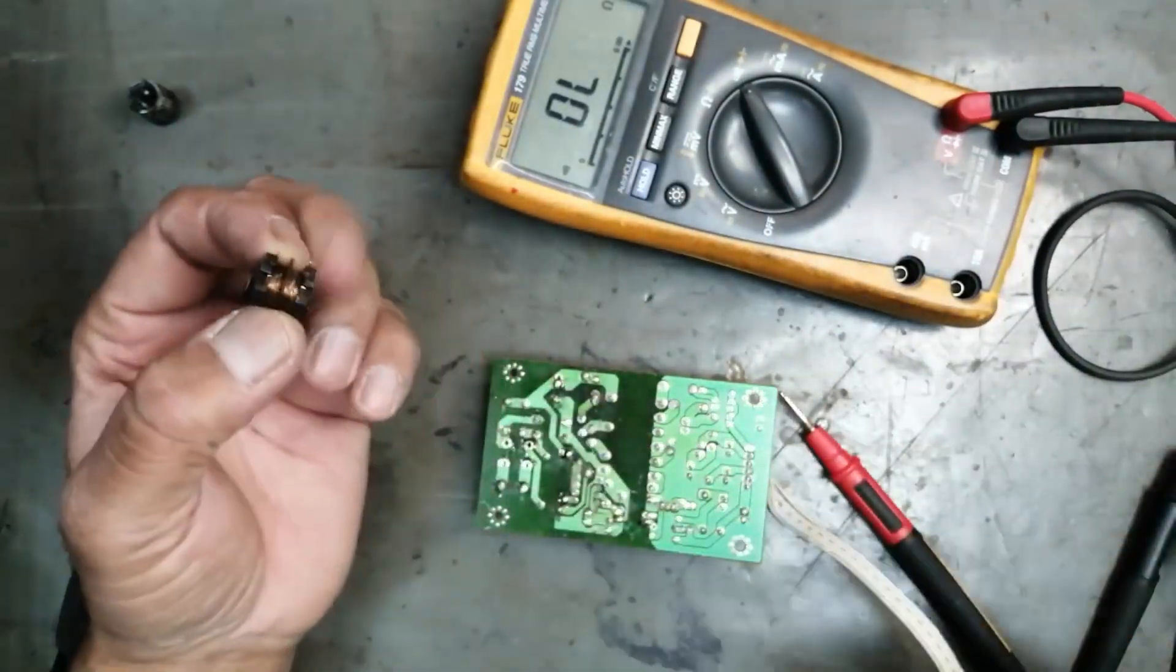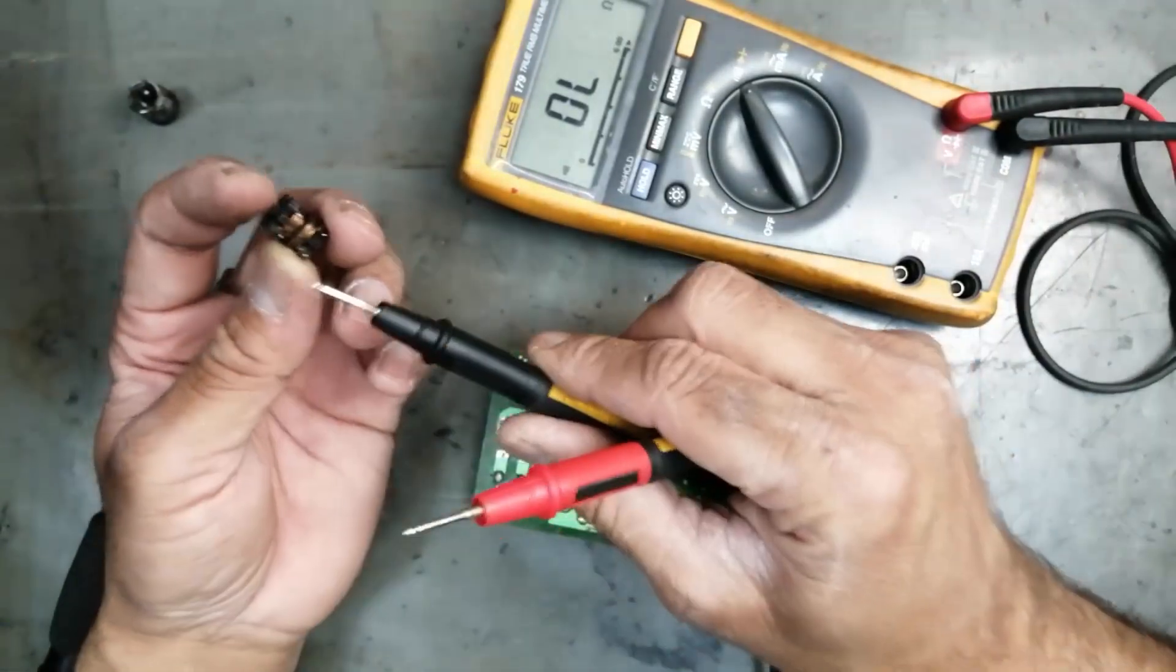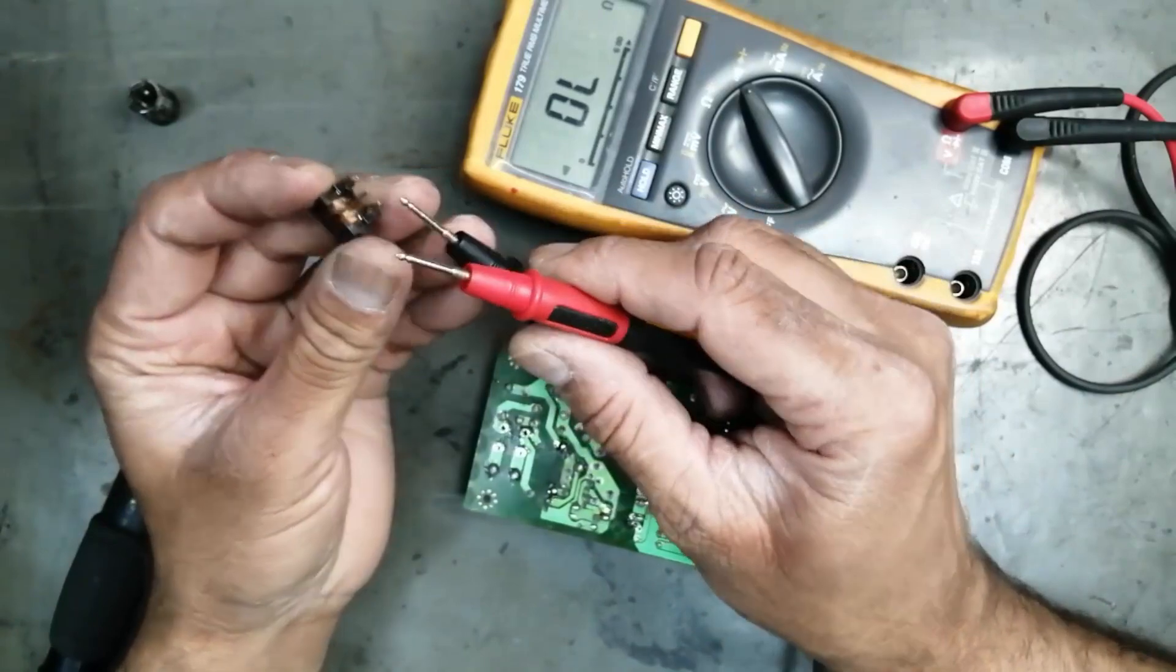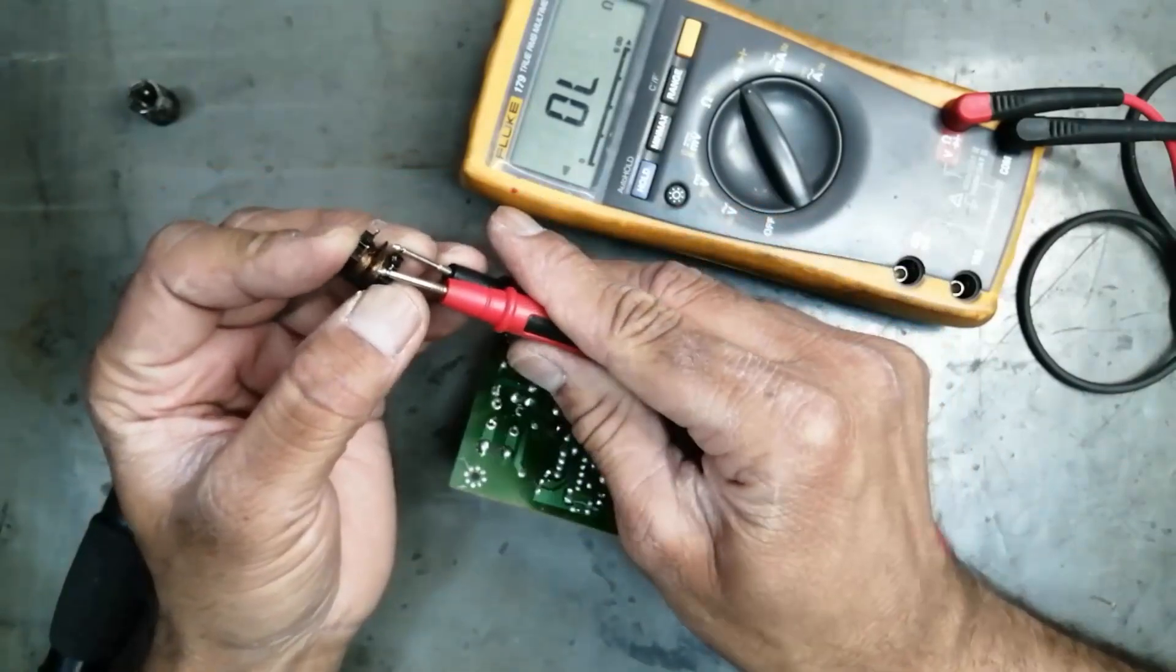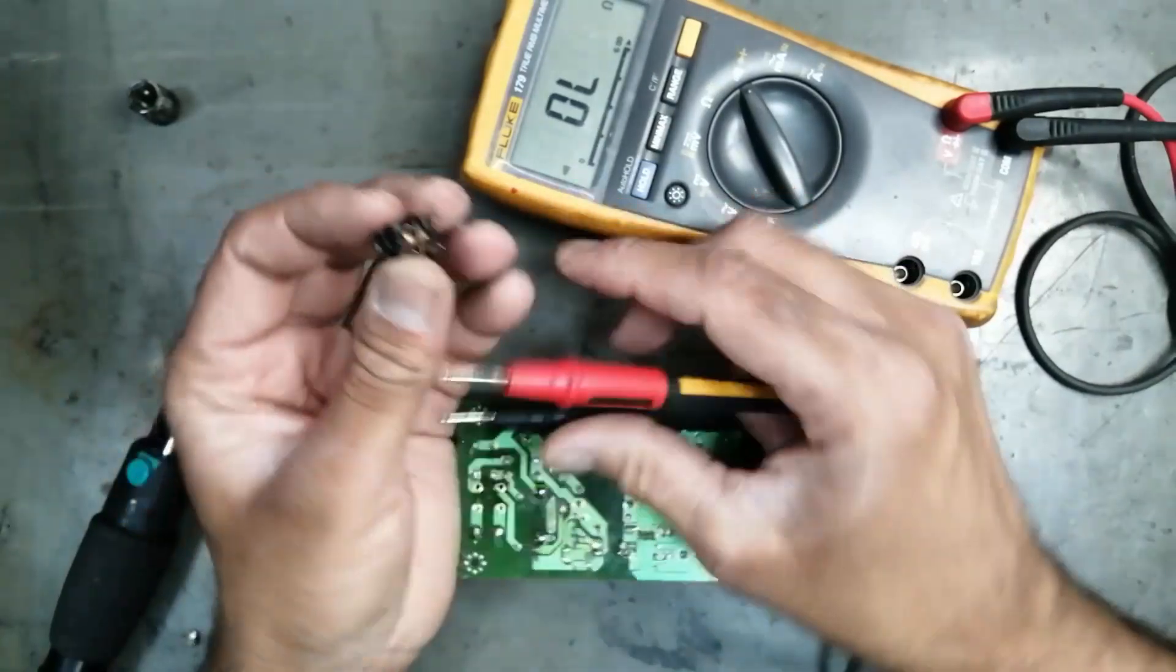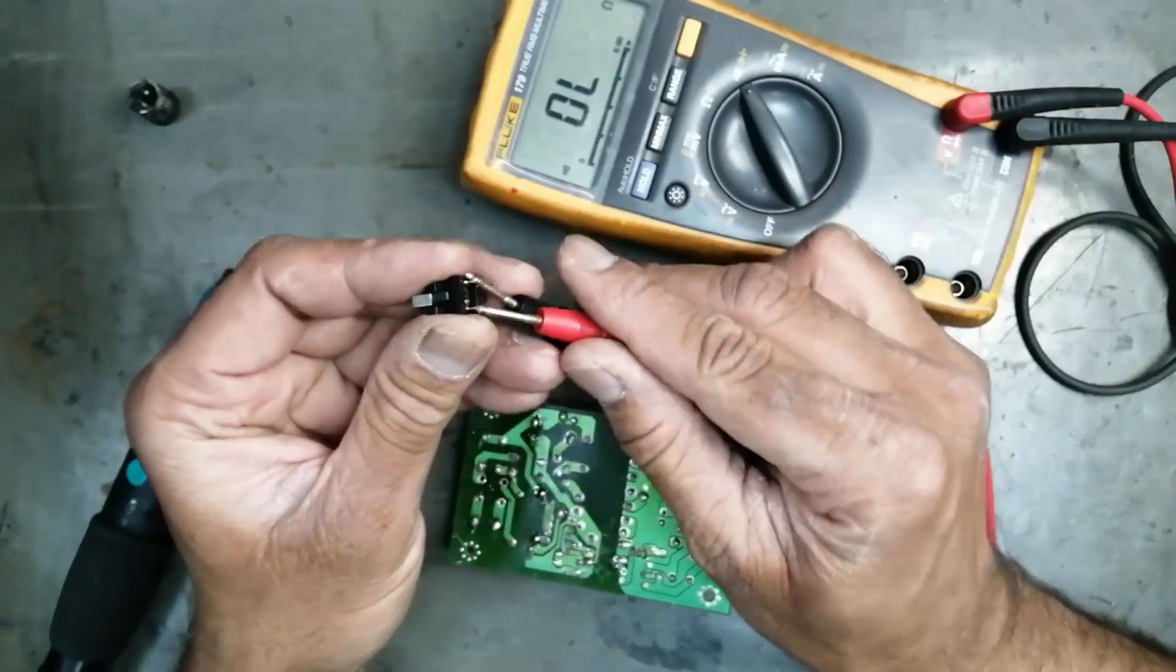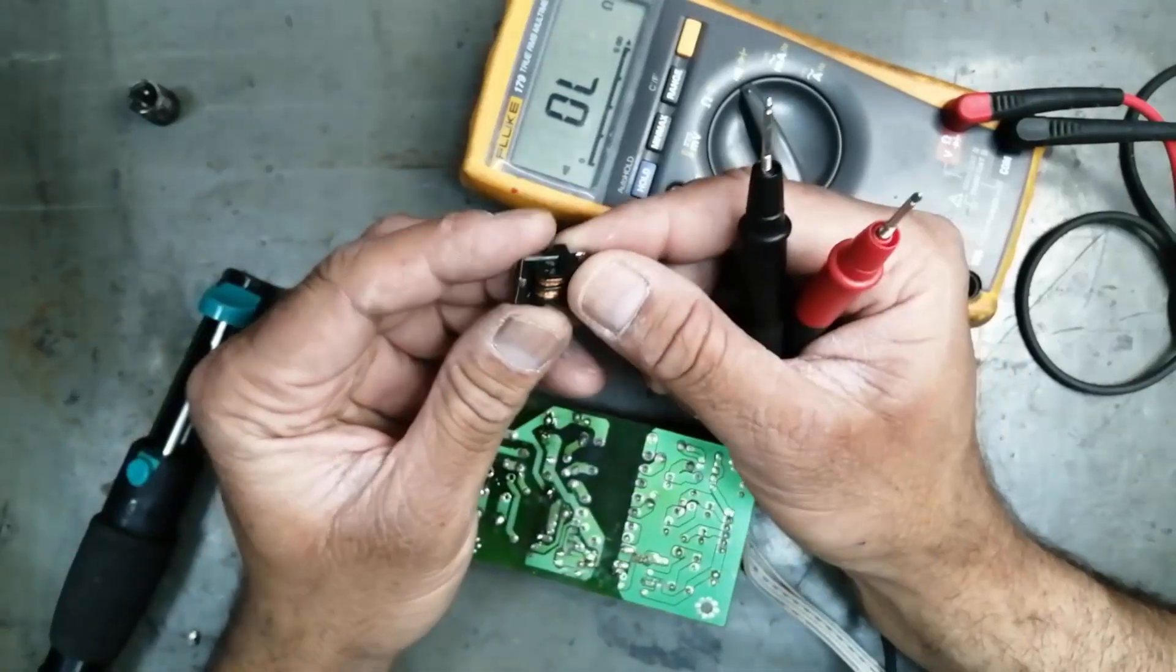I removed this inductor. It should give continuity, so it is not giving reading. That means this inductor is unusable. This dual line filter is bad.